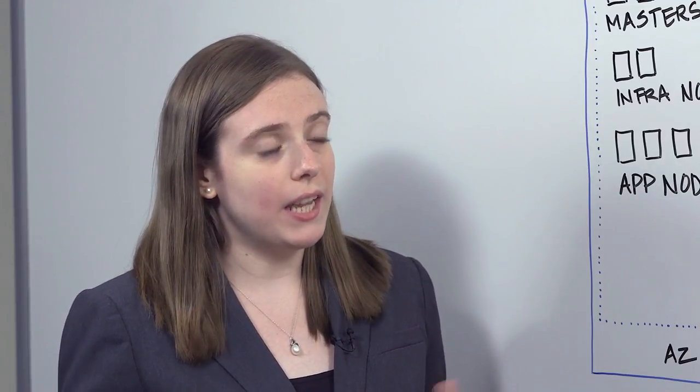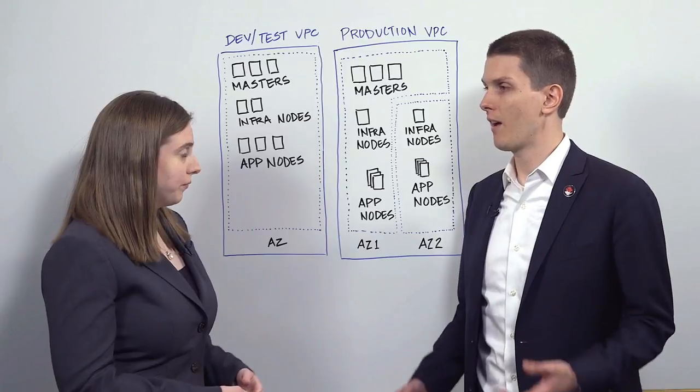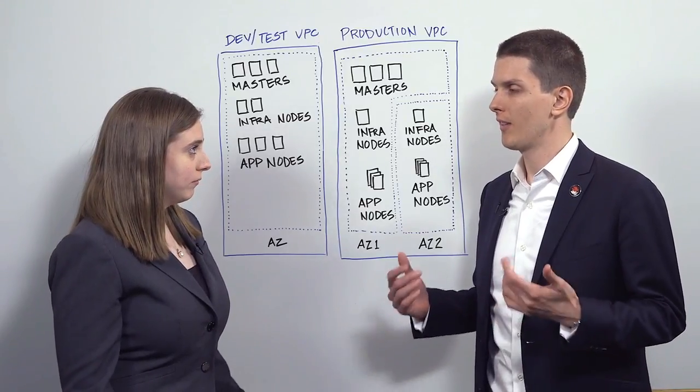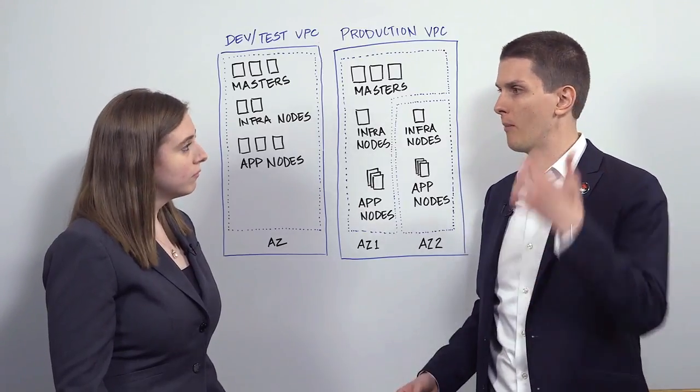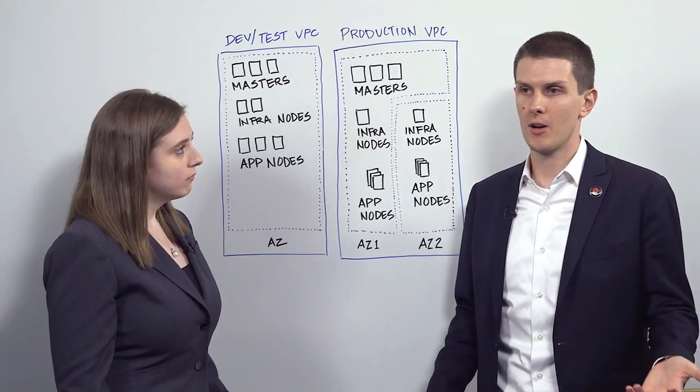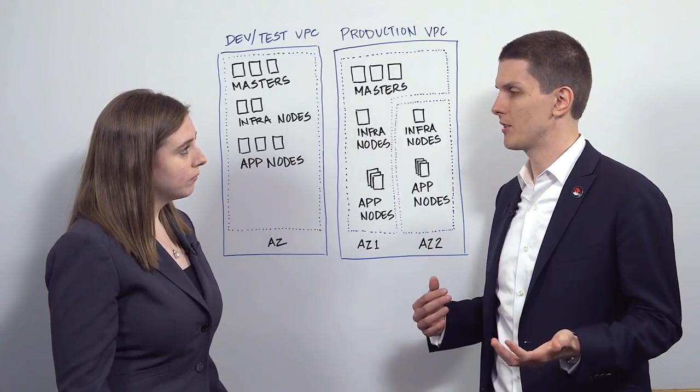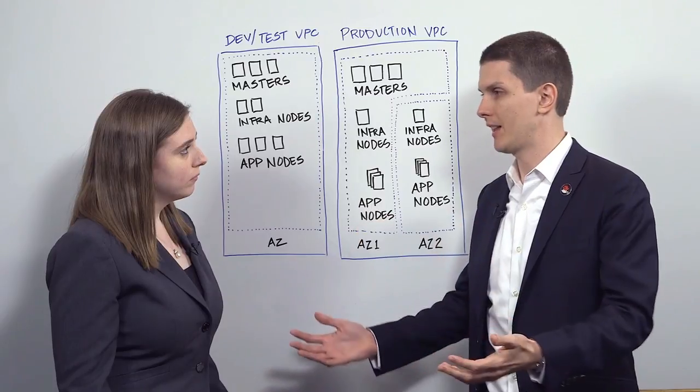When you're deciding to deploy an OpenShift cluster on Amazon Web Services, you first want to start with the design, because AWS actually has some features that can help enhance the functionality of your OpenShift cluster. Let's assume you want to do a standard OpenShift deployment with a dev test cluster and a production cluster with multiple master nodes, multiple infra nodes, and multiple application nodes. The best way to separate your clusters in Amazon is using a VPC, or virtual private cloud, which is essentially a way to logically separate your instances or your entire cluster.